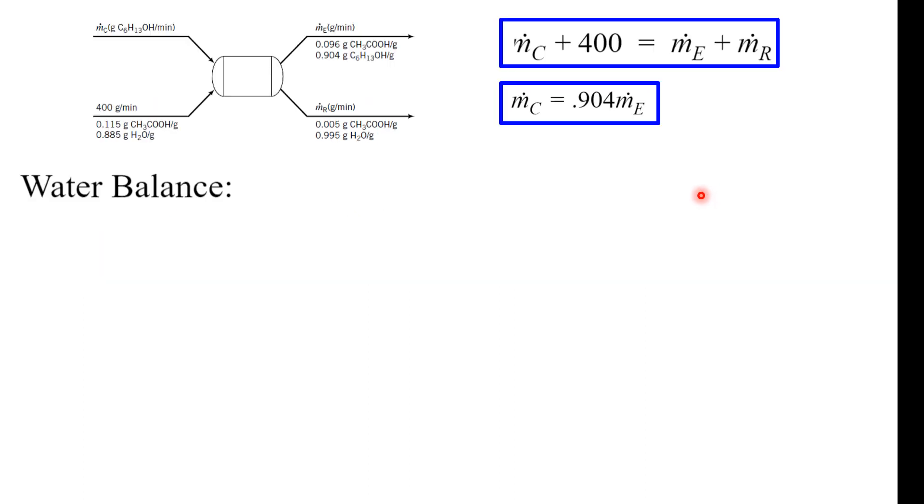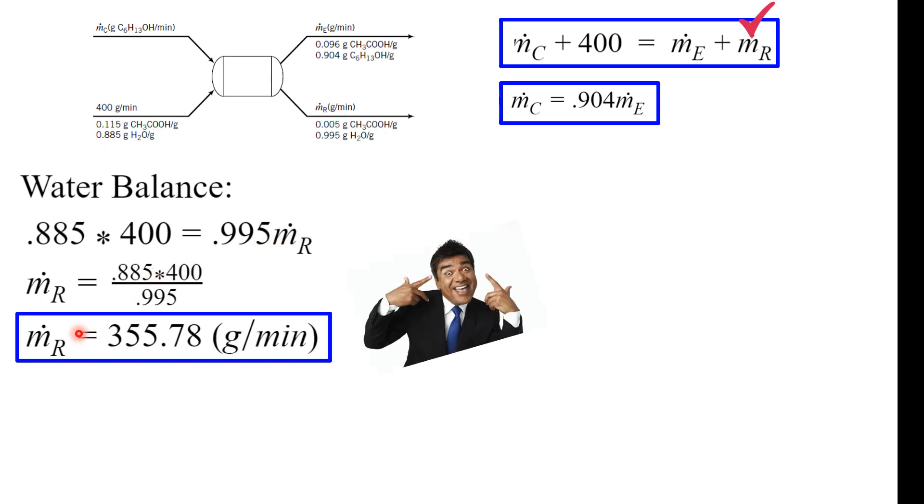All right, last thing we can do is the water balance. So again, what's coming in is going to be the water right here, and set it equal to the water coming out. Very similar, multiply it all right. And do a little math. Hey look, we actually solve for the flow rate of the raffinate stream. Yay!